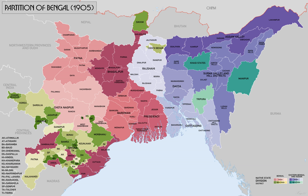The government announced the idea for partition in January 1904. The idea was opposed by Henry John Stedman Cotton, Chief Commissioner of Assam. The partition was enacted on 16 October 1905 by Viceroy Curzon and Kyan Adin Ahmet, the chief secretary of Bengal.